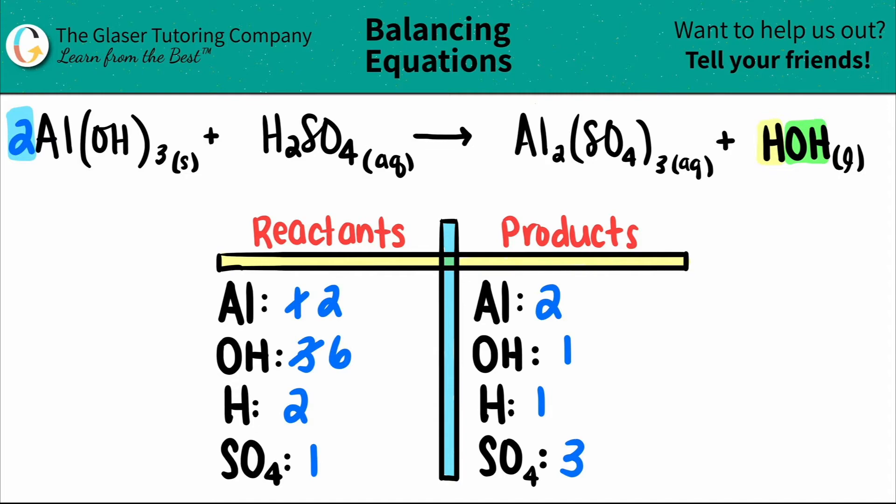So now let's just see which one looks easiest. Maybe I'll balance the sulfates. You could jump around. That's fine with me. I see that I have a one. One times what will get me to three? One times three. And that number that you put is the coefficient for the spot for the, in this case, the polyatomic, the sulfate, right?